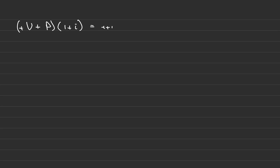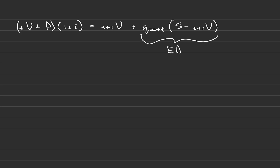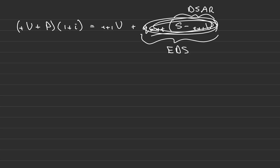The recursive reserve formula states that the reserves at time t plus the premium accumulated for one year should equal the reserves at time t plus one, plus q(x+t) times (S minus t+1 V). The reserves held at the beginning of the year plus the income received on that year, accumulated for a year, should equal the amount we'll need to hold at the end of the year plus this expected death strain.